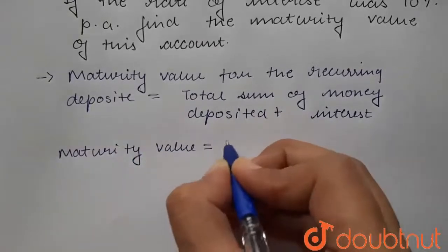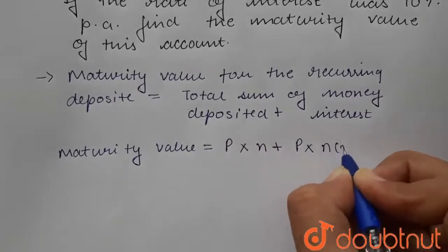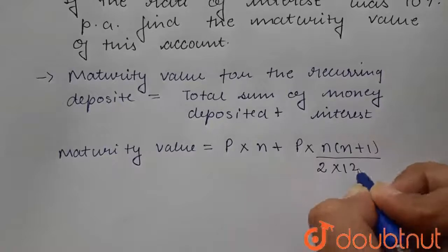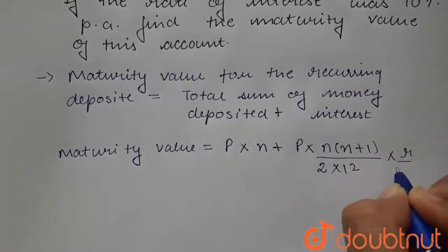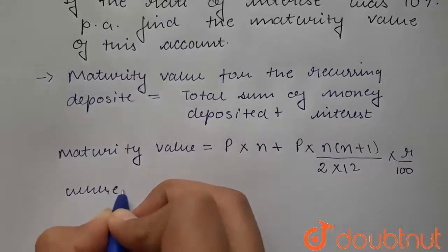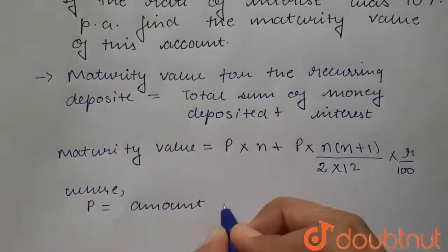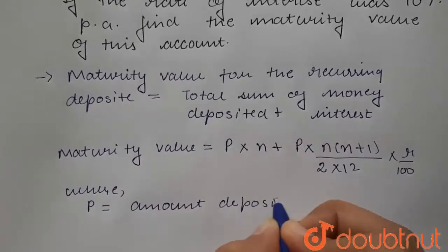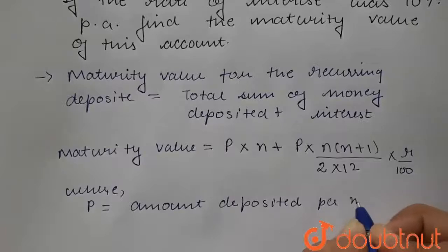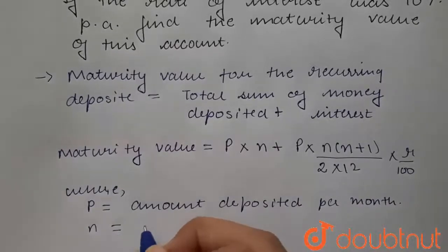(r/100), where P is the amount deposited per month and n is the number of months